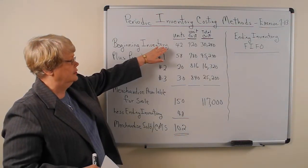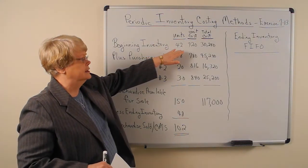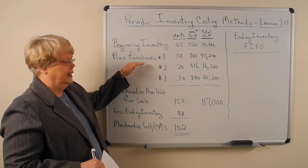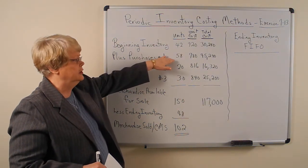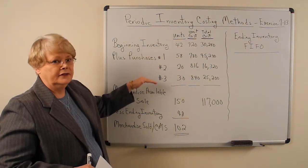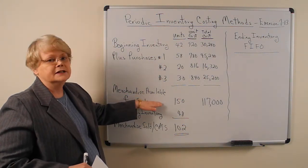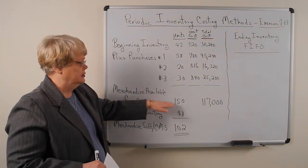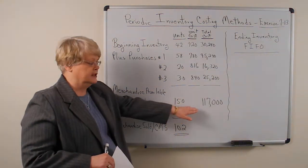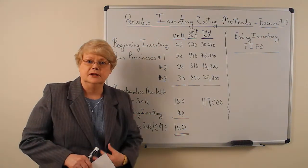We know what we have for beginning inventory — we know the number of units and we should have a beginning unit cost, which gives our total cost. Then as we make purchases, we put in the units, the unit cost, and the total cost in the order they were purchased. So what we have here is merchandise available for sale in units and in dollars. But what we don't know is how much of this dollar amount goes to ending inventory and how much goes to cost of merchandise sold.